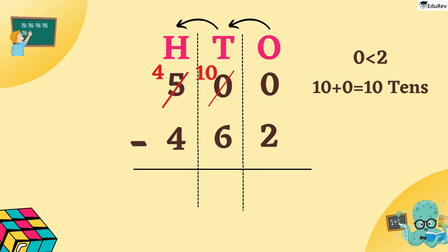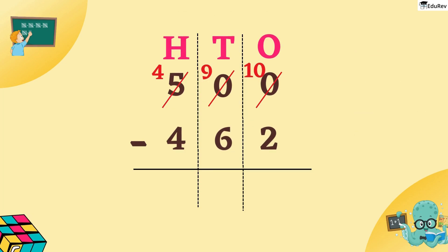Now, the 1s place borrows from 10s place. Take 1 from 10. It becomes 9 and the 1s place becomes 10. So, 10 minus 2 is equal to 8.